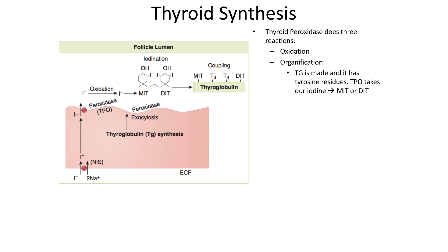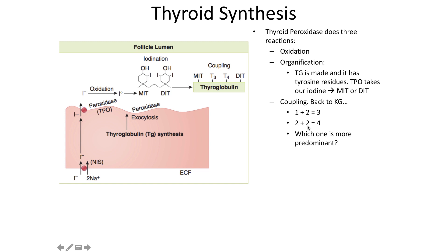Thyroglobulin has tyrosine residues. Thyroid peroxidase takes iodine and puts one iodine on a tyrosine to make MIT (monoiodotyrosine), or two iodines on a tyrosine to make DIT (diiodotyrosine). Coupling then combines these: MIT plus DIT gives T3, and DIT plus DIT gives T4.